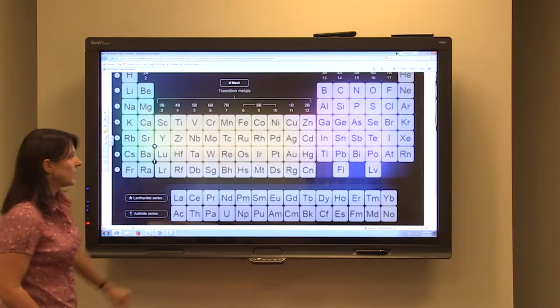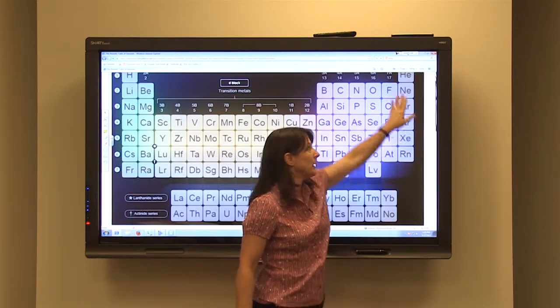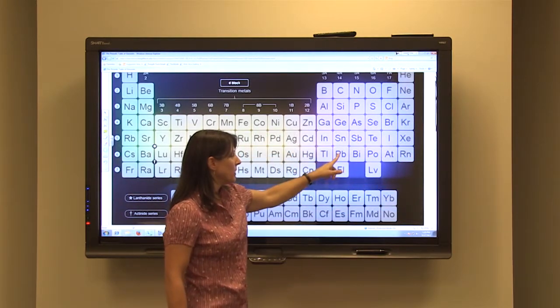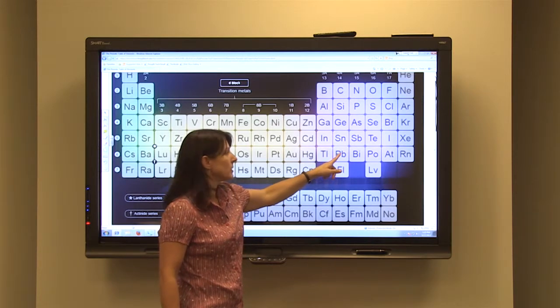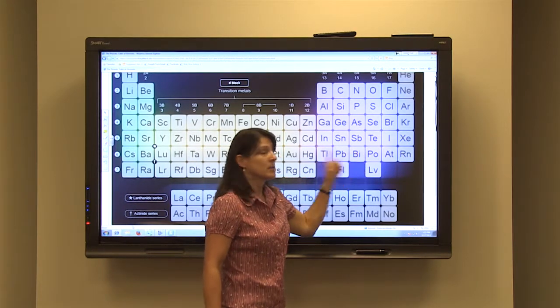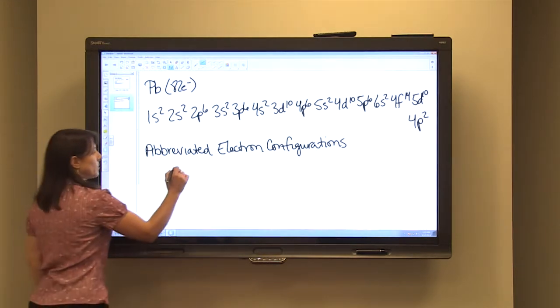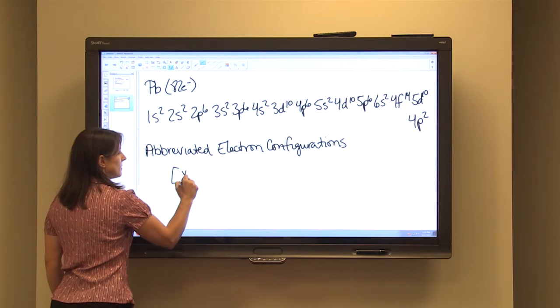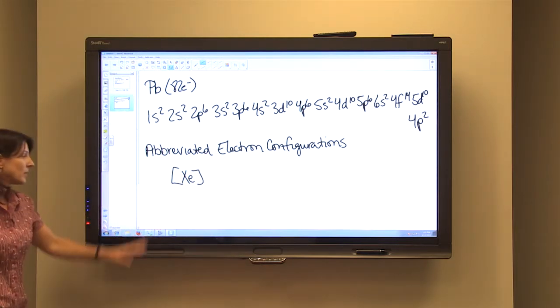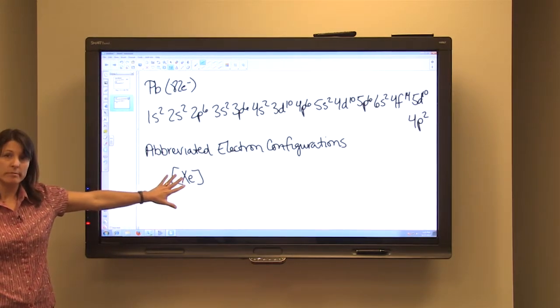The way we do it is by locating the noble gas that precedes the element on the periodic table. So for lead, we find the noble gas. Remember noble gases are in group 8A, the last column. We find the noble gas that comes before it. So we go up a row and over. So xenon is the noble gas that precedes lead. We are going to write the noble gas in square brackets. That represents all the electrons up to xenon.